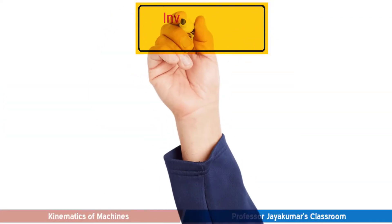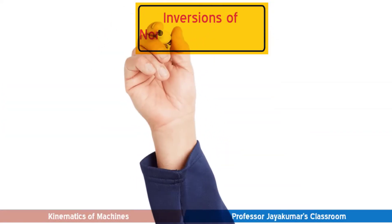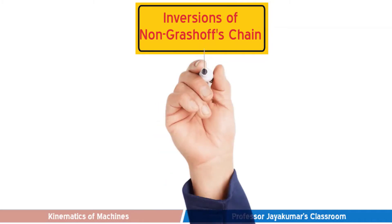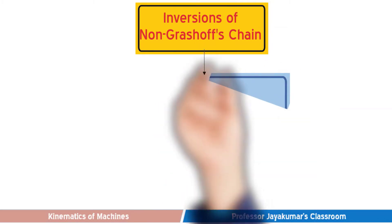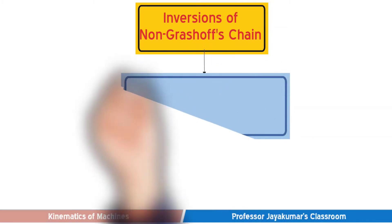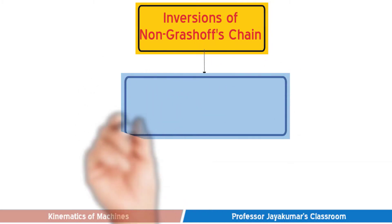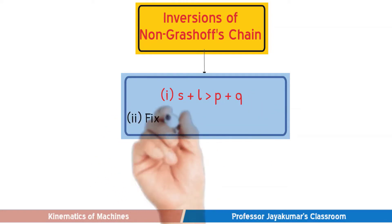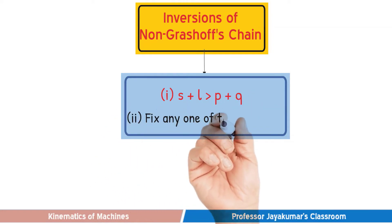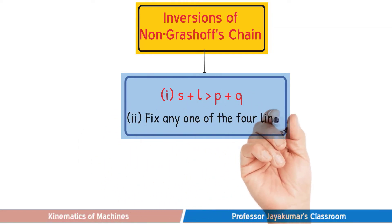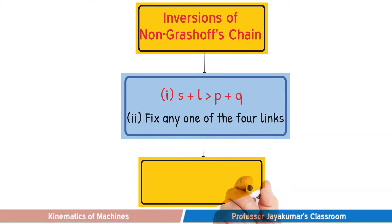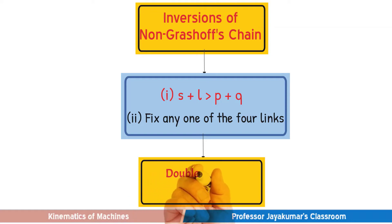For a non-Grasov's chain, S plus L will be greater than P plus Q. So, any link of the non-Grasov's chain that is fixed will form only a Double-Rocker or Double-Lever mechanism.